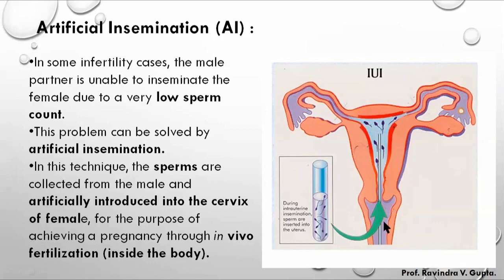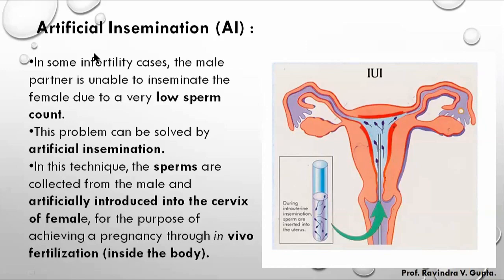In this technique, sperm is collected from the male and artificially introduced into the cervix of the female for fertilization. Unlike IVF, this fertilization occurs in the body (in vivo), not in a laboratory. There is no lab fertilization here — the sperm is directly transferred into the cervix or uterus to achieve pregnancy through in-vivo fertilization. This is artificial insemination.